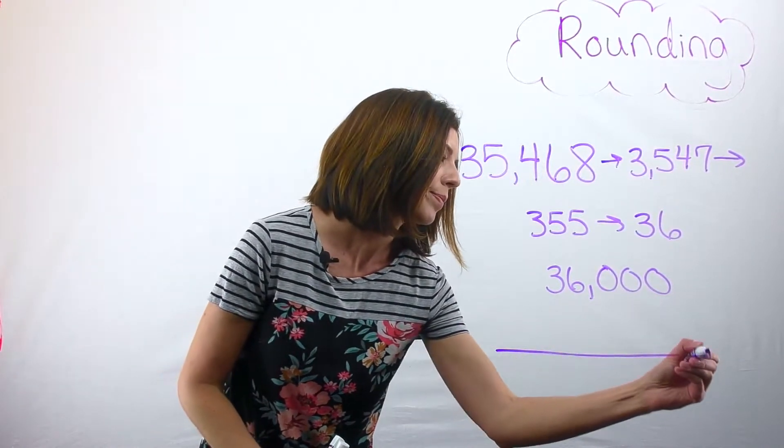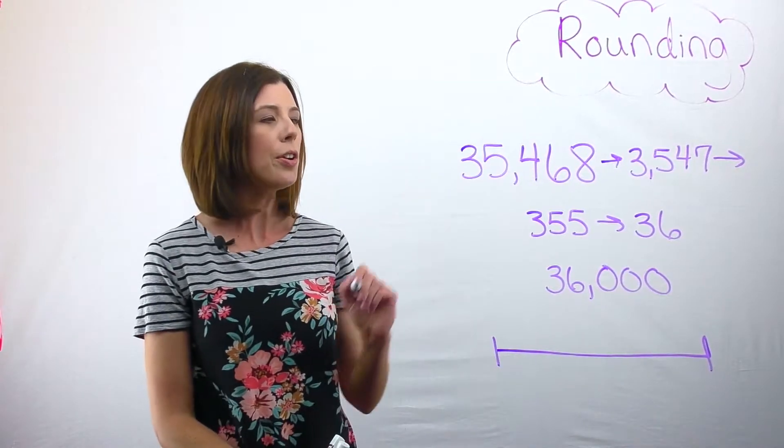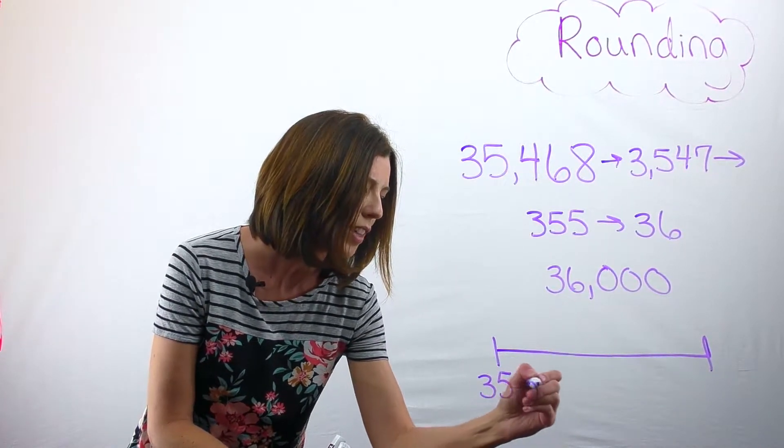So let's draw a number line. And I know that one possibility is you can pay me $35,000.